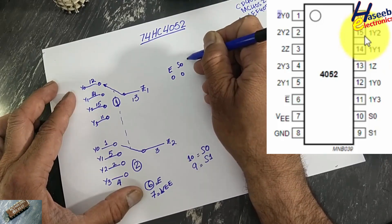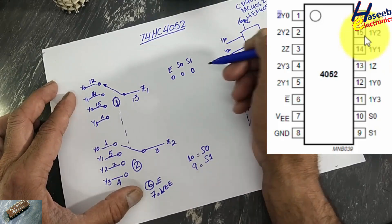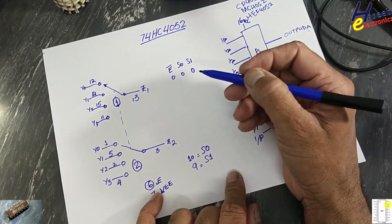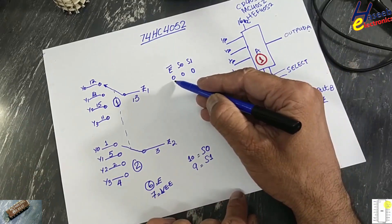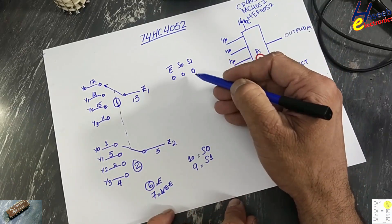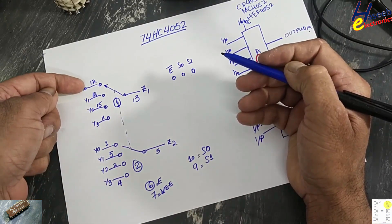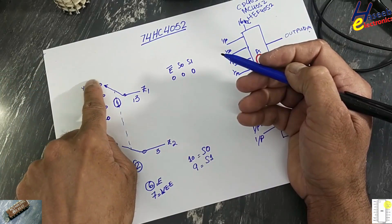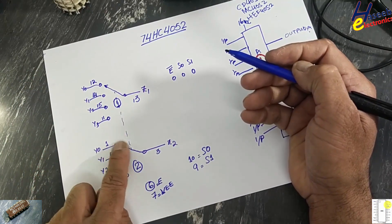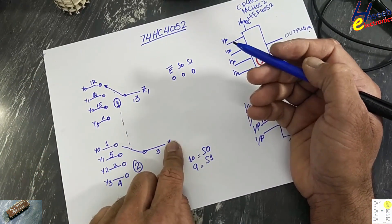If we connect the enable pin to low, S0 to low, and S1 to low, then Y0 will be connected to Z1, and 2Y0 will be connected to Z2.